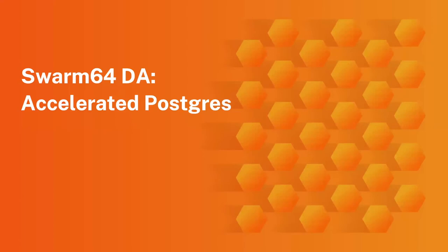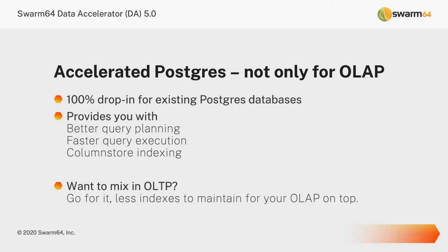Let's have a quick look at the product we offer, which we call Swarm64 DA — DA for Data Accelerator. What we want to achieve is an accelerated Postgres, not only for OLAP but also for hybrid cases. It won't give you a tremendous boost on transactions, but in certain cases you will see some speed gains. We provide an extension you can load into your Postgres. If you don't like it, you just remove it — there's no vendor lock-in. This works for community Postgres and also for EnterpriseDB Postgres. The extension gives you better query planning, faster query execution, and the column store indexing we've been talking about.